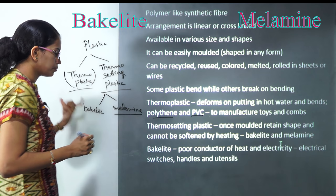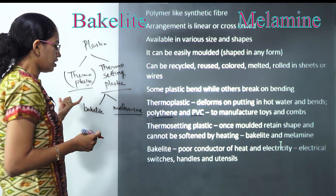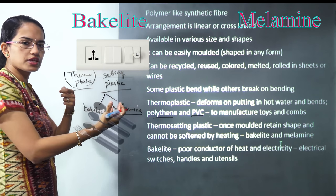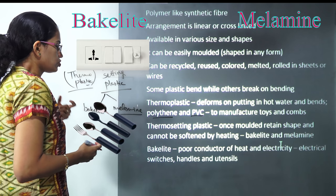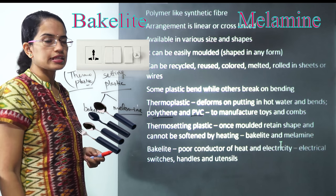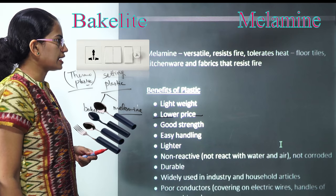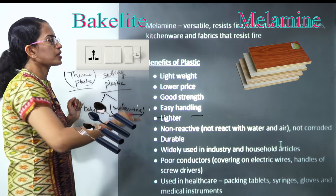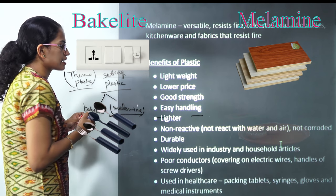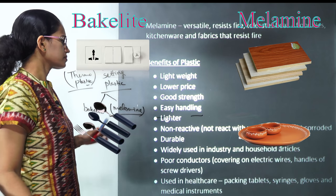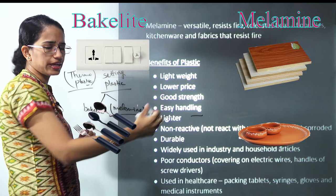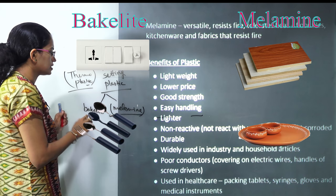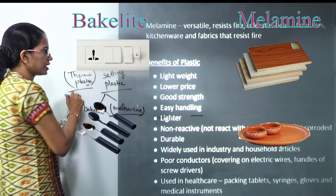Bakelite is a poor conductor of heat and electricity and is used in switches and handles of utensils. The next is melamine, which is much more versatile and heat resistant. It is used in flooring tiles and in fabrics used for fire resistance. In fire extinguishers, we use melamine. So melamine and bakelite are thermosetting plastics, whereas PVC and polyethylene are thermoplastics.